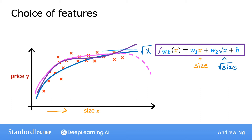So this would be another choice of features that might work well for this dataset as well. You may ask yourself, how do I decide what features to use? Later, in the second course in the specialization, you'll see how you can choose different features and different models that include or don't include these features, and you have a process for measuring how well these different models perform to help you decide which features to include or not include. For now, I just want you to be aware that you have a choice in what features you use, and by using feature engineering and polynomial functions, you can potentially get a much better model for your data.